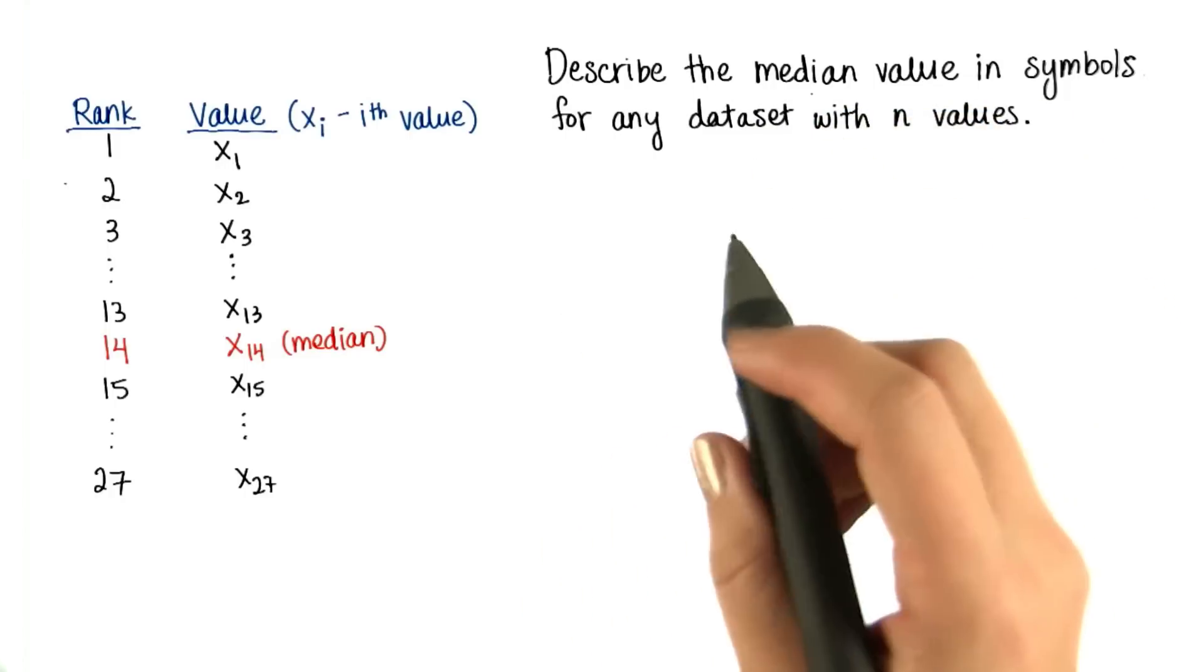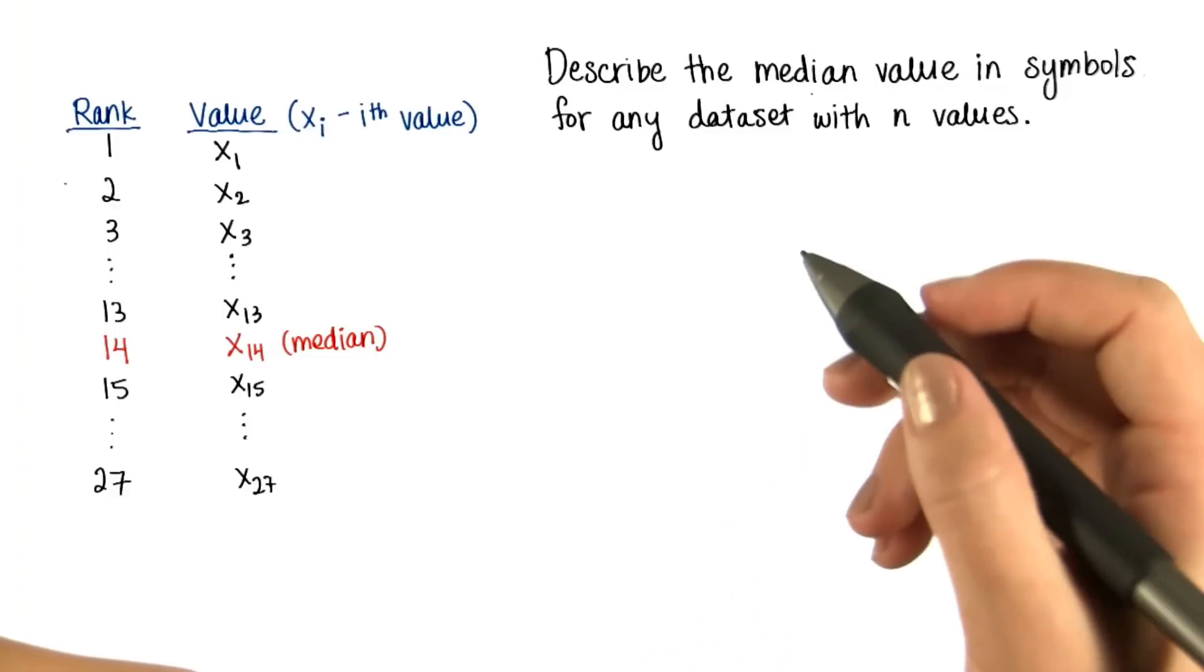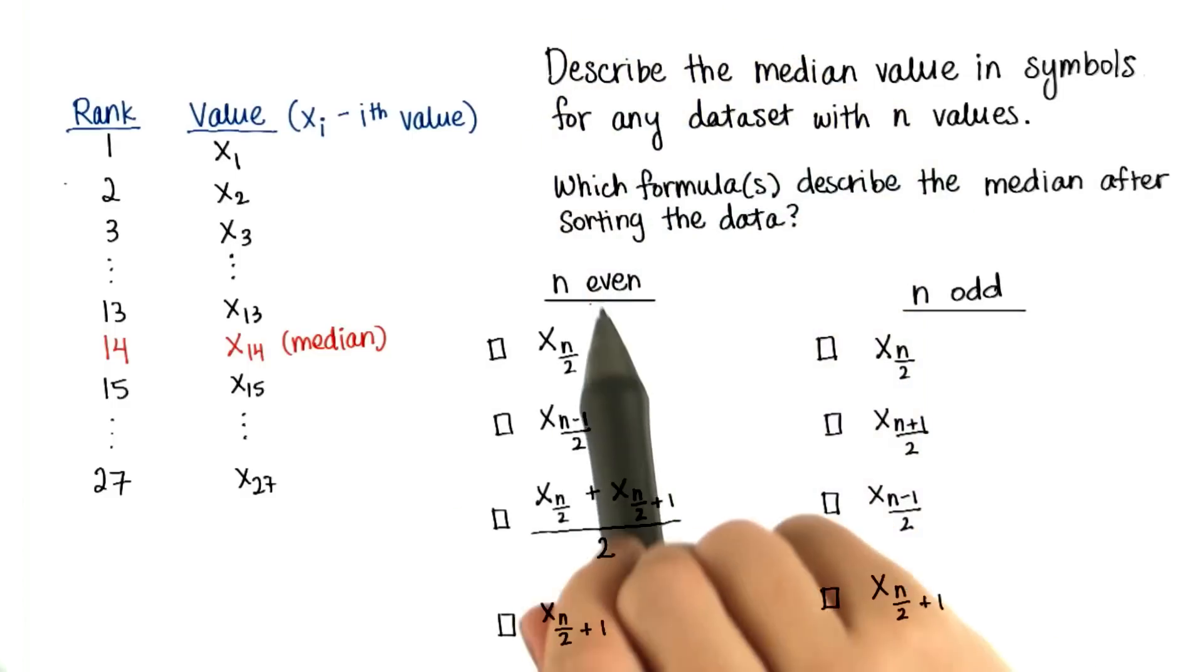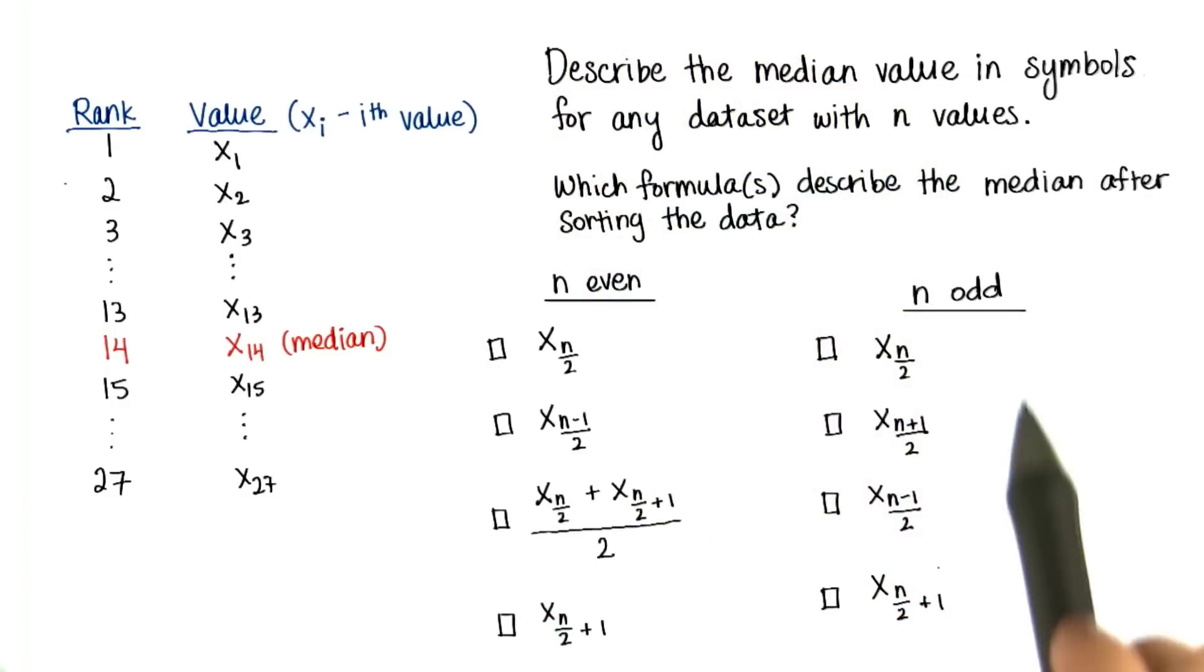Now this is going to be a really tricky quiz. Which formulas describe the median after sorting the data? There's only one answer for n even and one answer for n odd.